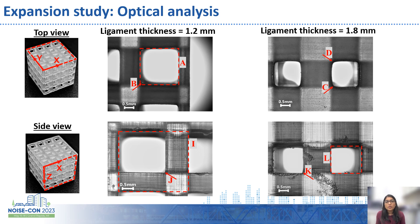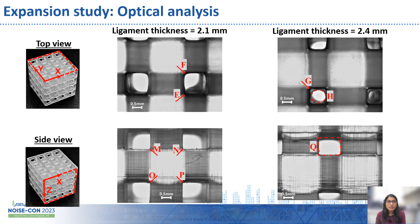This lower amount of expansion along the depth, or the build direction, is attributed to a minimum layer thickness of 0.025 mm, which results in a lower amount of polymer along the build direction. A similar behavior is again seen, with larger expansion along the XY plane and smaller expansion along the build direction. Overall, larger ligament thickness exhibits a greater degree of expansion with increased curvatures, and in some cases the pores also tend to narrow down to a circle.